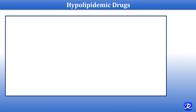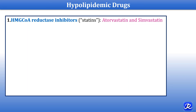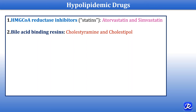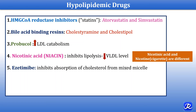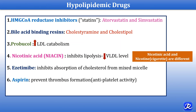Hypolipidemic drugs that decrease cholesterol levels include: HMG-CoA reductase inhibitors (statins) like atorvastatin and simvastatin; bile acid-binding resins like cholestyramine and colestipol; probucol, which increases LDL catabolism; nicotinic acid, which inhibits lipolysis and decreases VLDL levels; ezetimibe, which inhibits absorption of cholesterol from mixed micelles; aspirin, which prevents thrombus formation through antiplatelet activity; and vitamin E, which acts as an antioxidant.